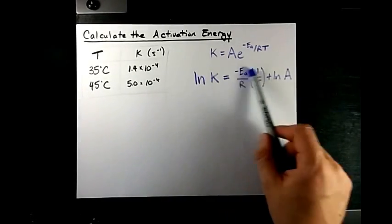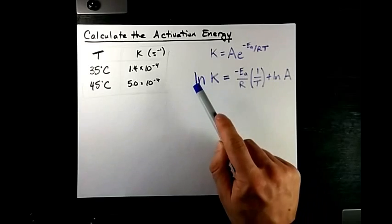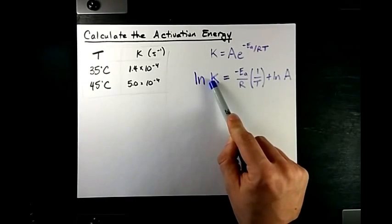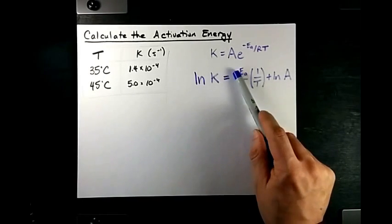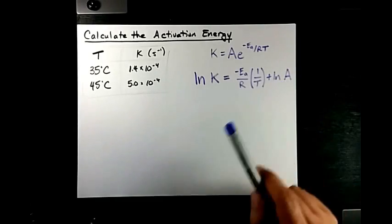And it gives you that the ln of the rate constant equals negative EA over RT plus the ln of A.